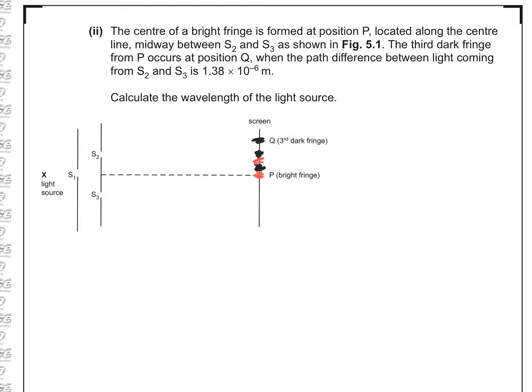And so we've got a third dark fringe. So we can look at how that relates to our little equation. So we've got path difference equal to n plus a half lambda. So this first one will be where n is 0, and the path difference is just half a lambda. This will be where n is 1, and this will be where n is equal to 2.